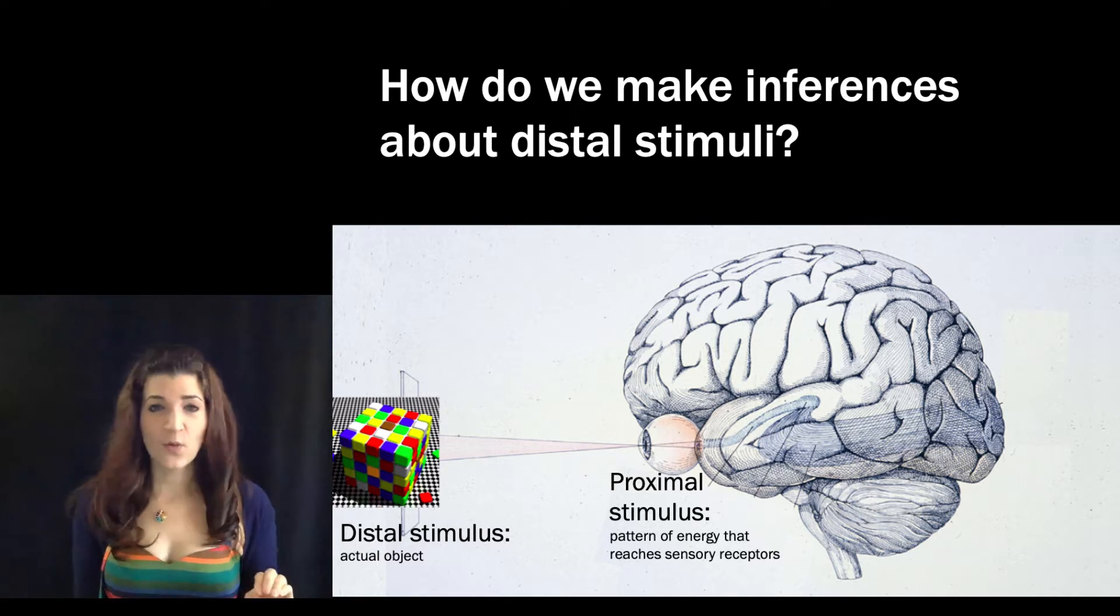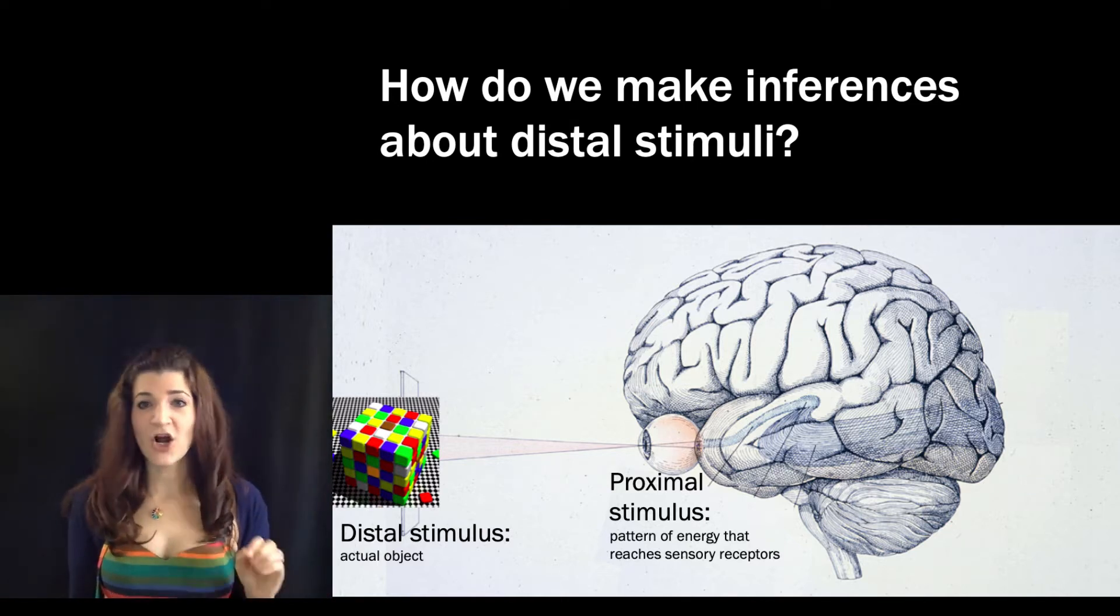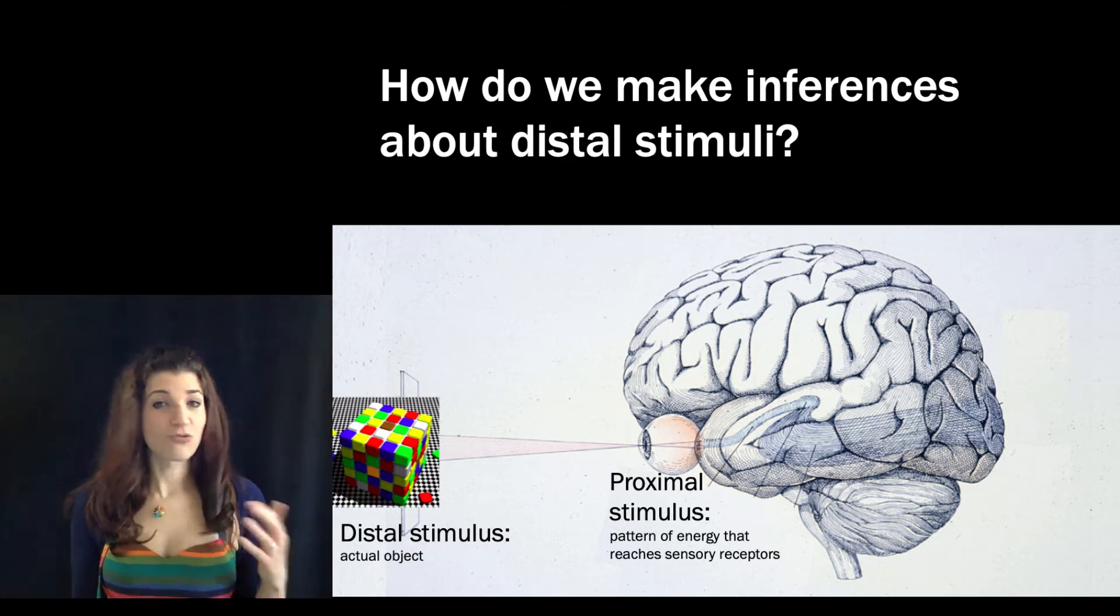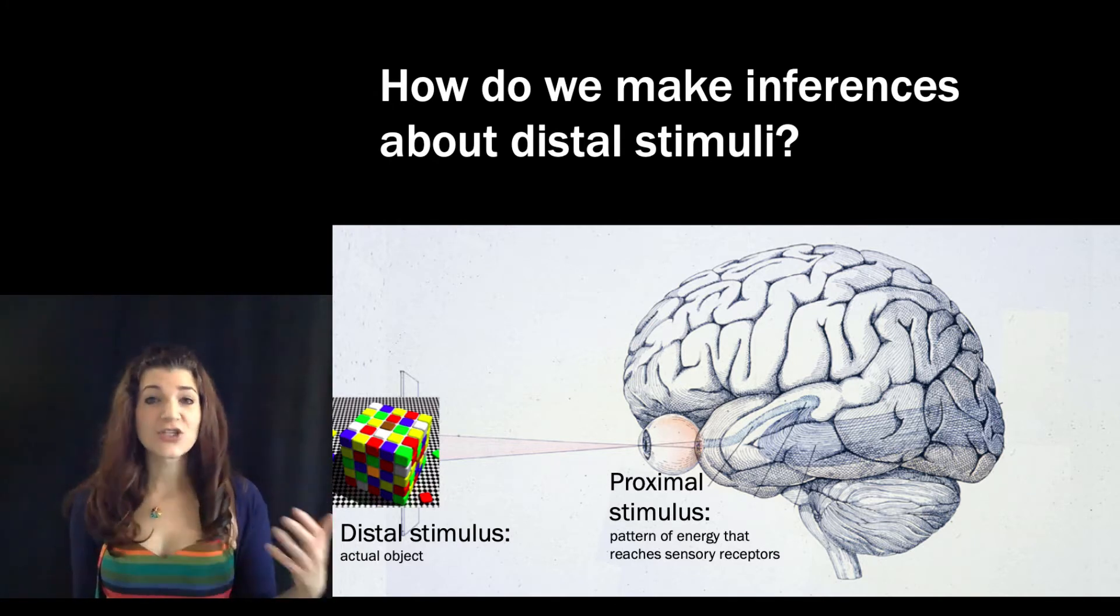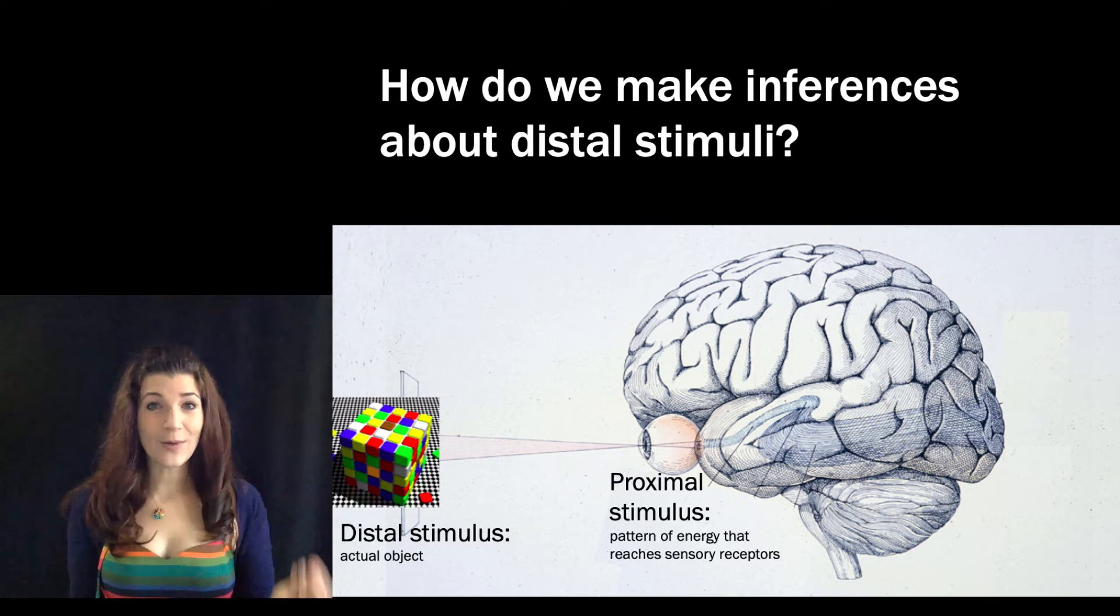So there may be a rose out in the world, but the sensory receptors in our eyes aren't able to distinguish necessarily between a red rose in sunlight and a white rose under a red lamp. So one of the challenges that the visual system faces is making inferences, is making guesses about the likely source of what's out there in the world based solely on the weak and somewhat watered down proximal stimulus that we actually have access to.